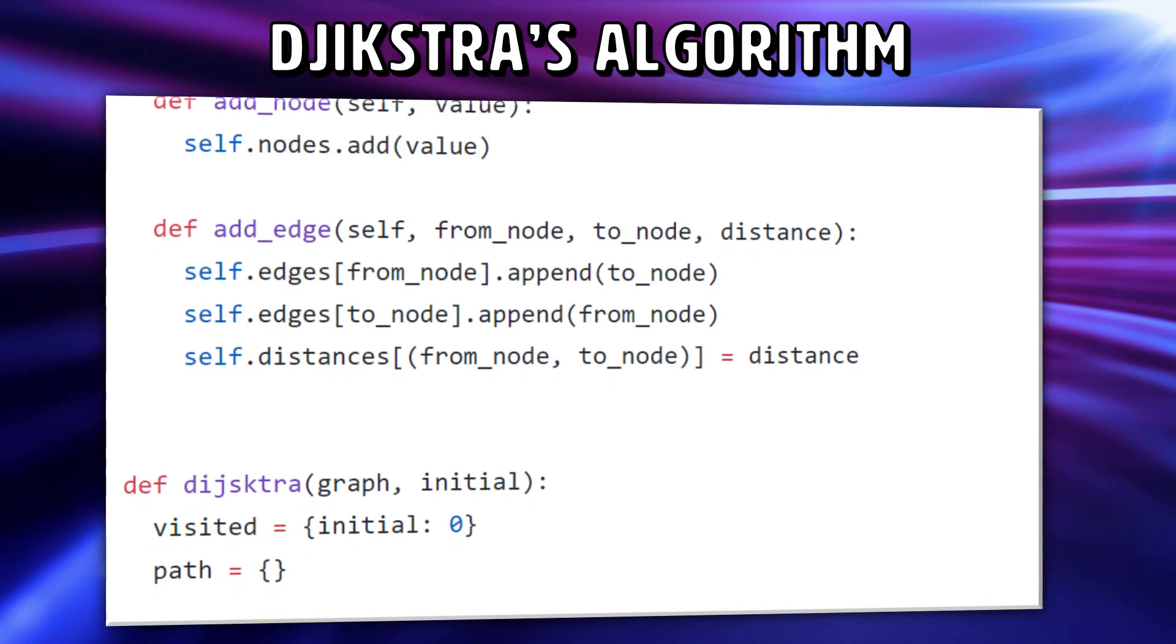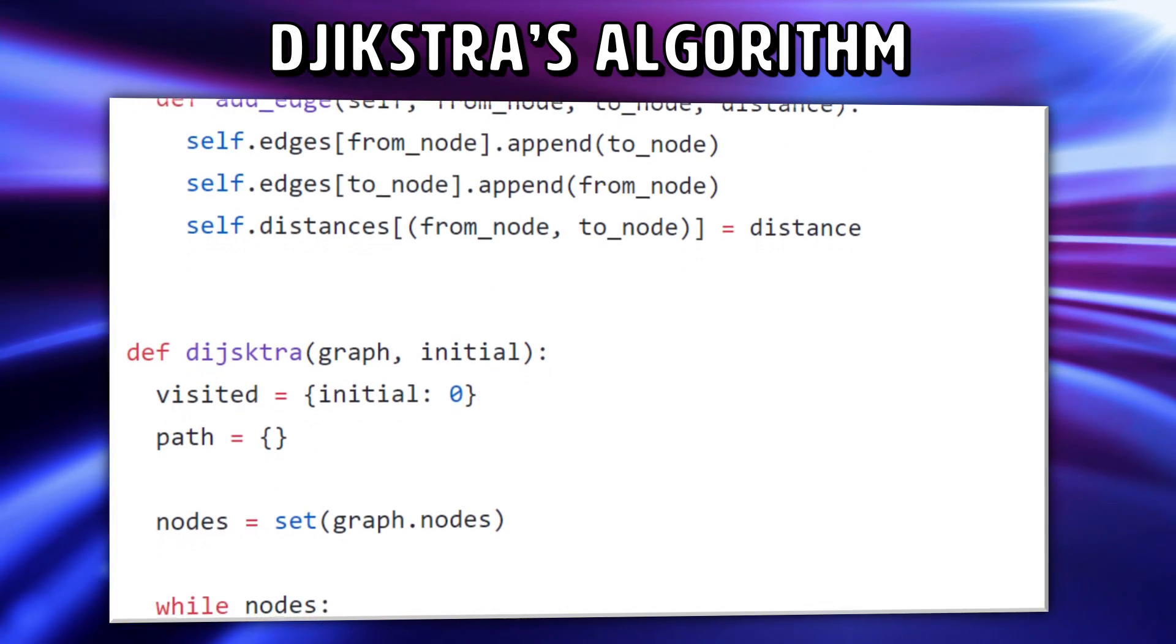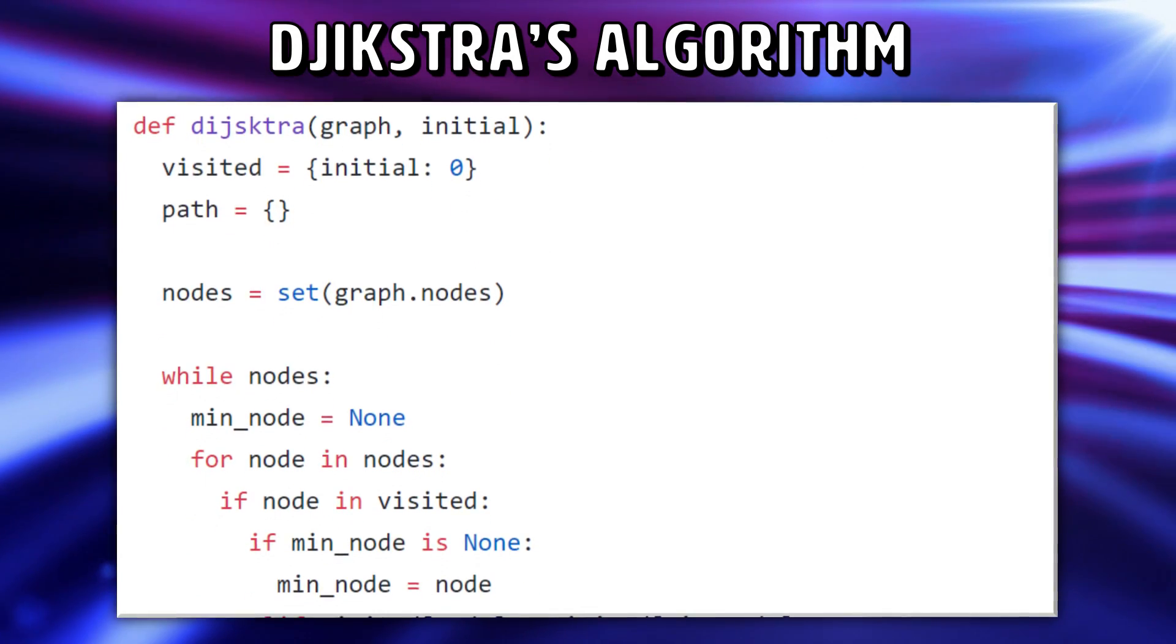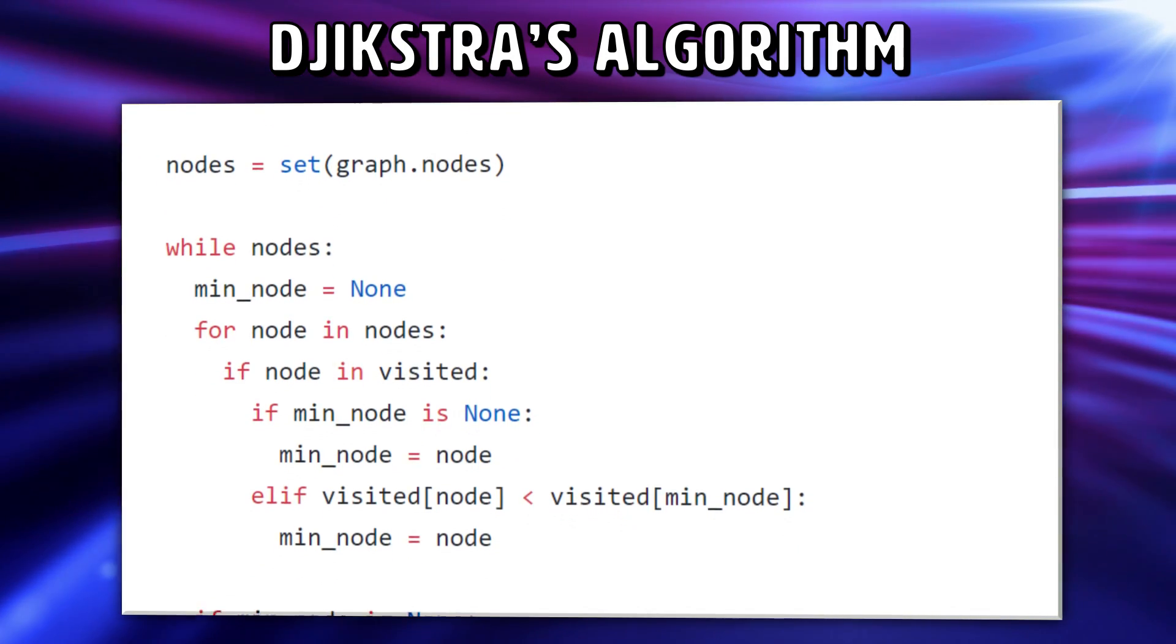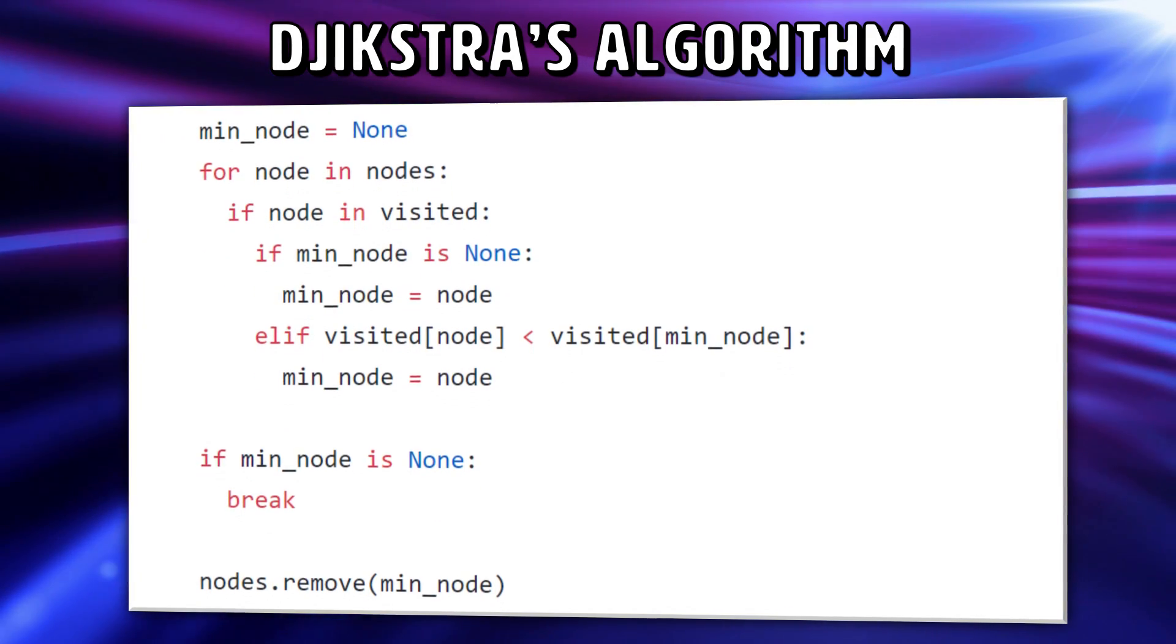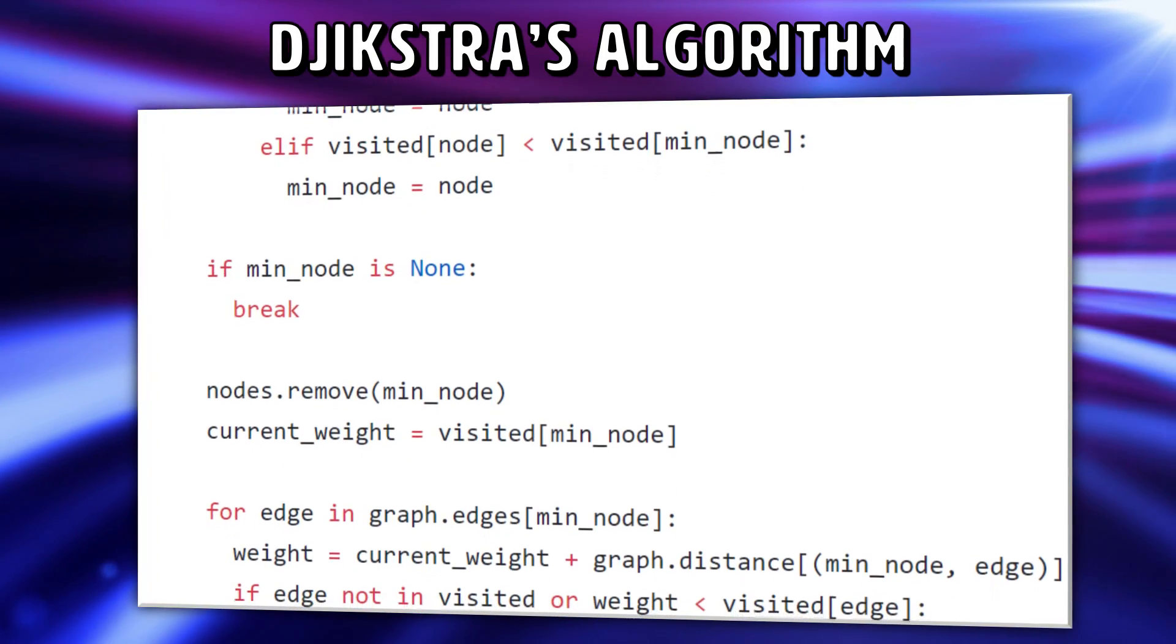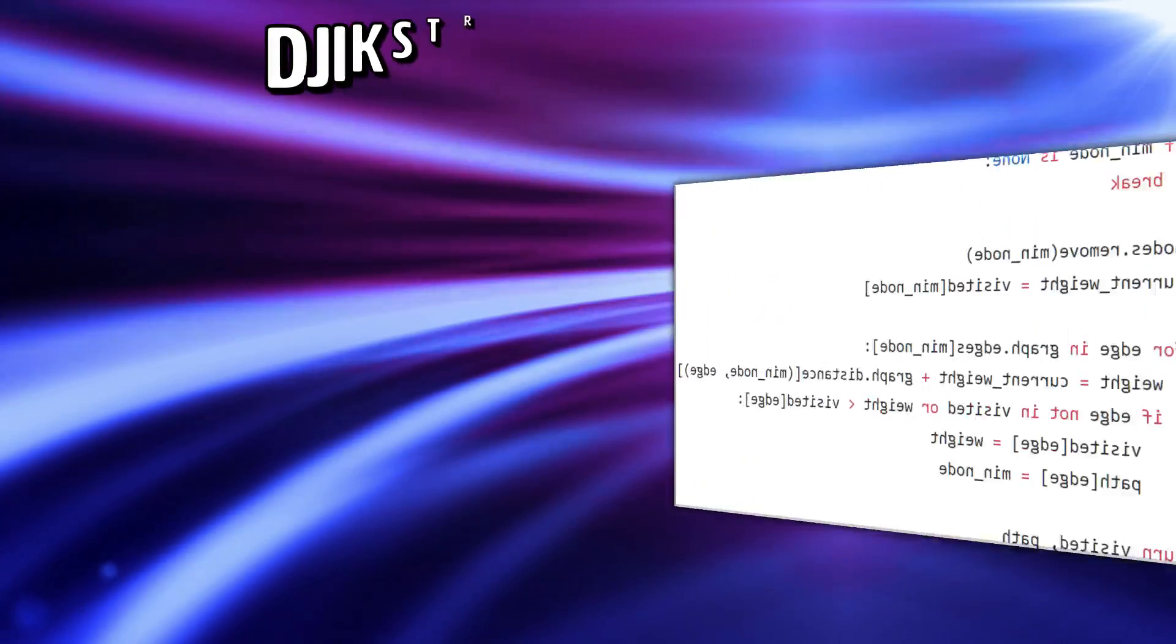Then we set the non-visited node with the smallest current distance as the current node. For each neighbor of our current node, we add the current distance of the current node with the weight of the edge connecting it to the neighbor. If it's smaller than the current distance of N, we set it as the new current distance of N. We then mark the current node as visited, and if there are any non-visited nodes left, we repeat the process starting at the second step until we visited all the nodes. Thanks to a little Python script, we can easily find the shortest path to the lab, saving us a lot of time.